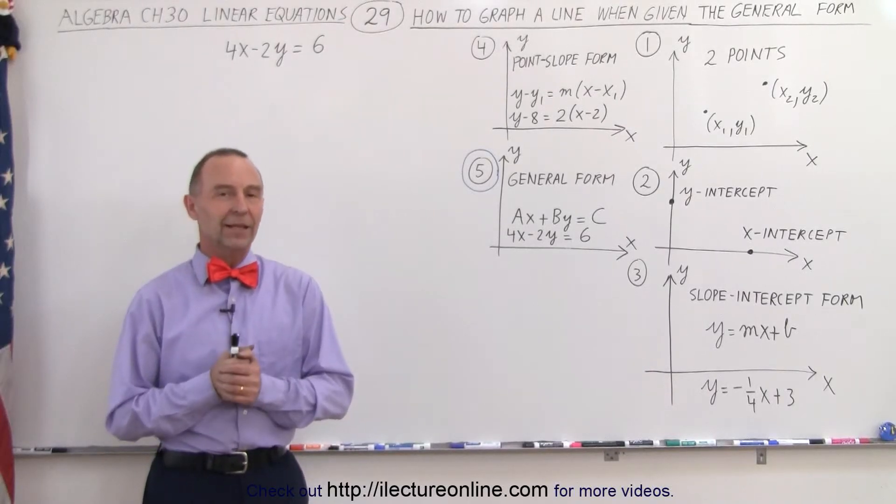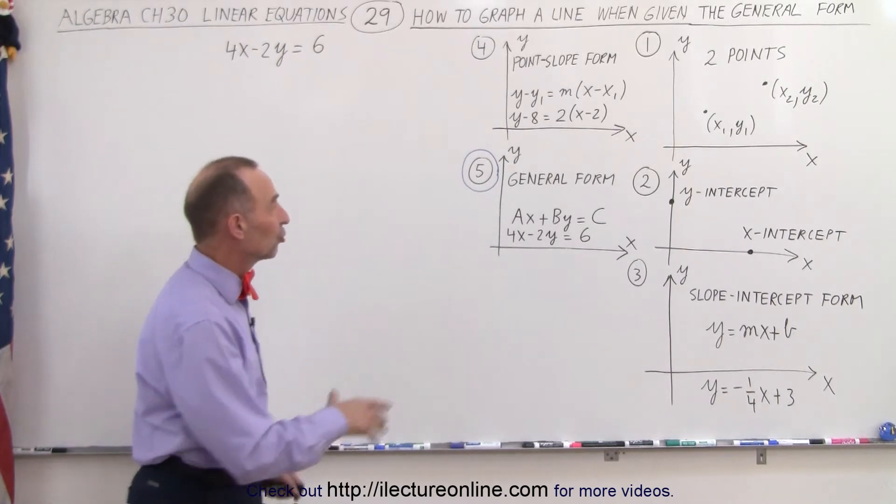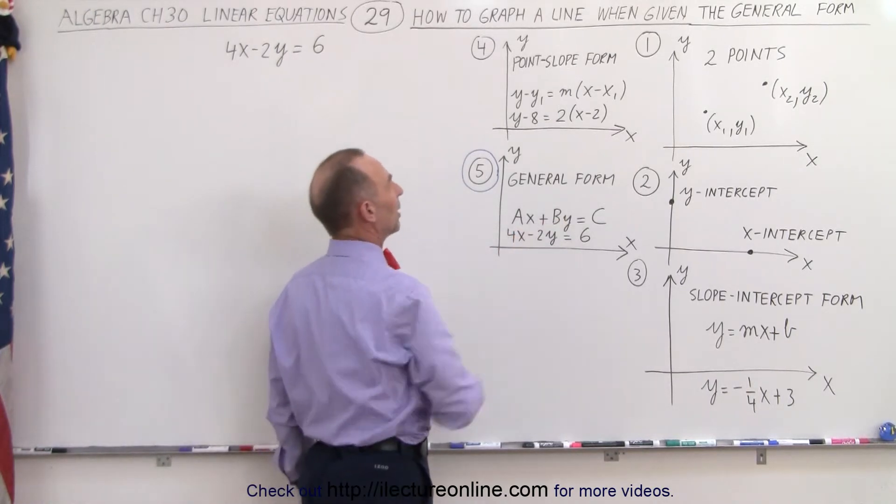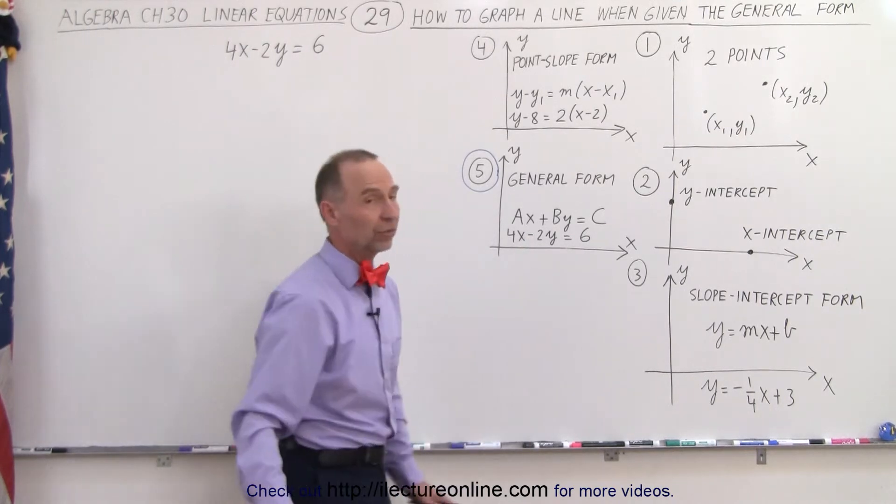Welcome to our lecture online, and now let's look at the last form in which the equation can be put, the general form. AX plus BY equals C, and the specific equation we're going to deal with is 4X minus 2Y equals 6.